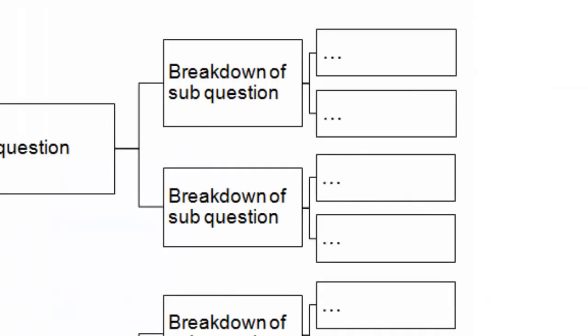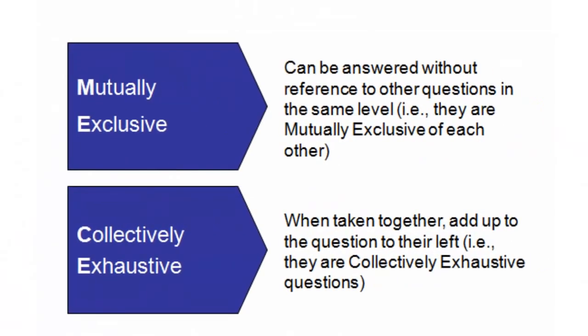Before kicking off, the team reflects on good practices of creating Issue Trees. Good Issue Trees have questions at each level which are MISI. Mutually exclusive means that questions can be answered without reference to other questions in the same level, and collectively exhaustive means that when taken together, questions in the same level add up to the question to their left.